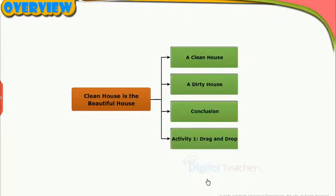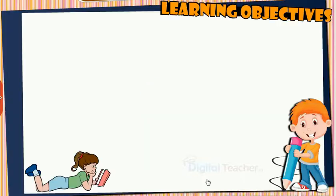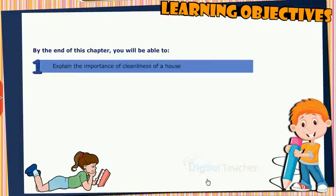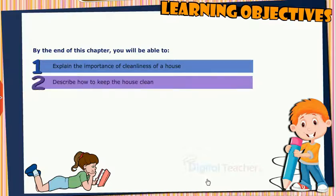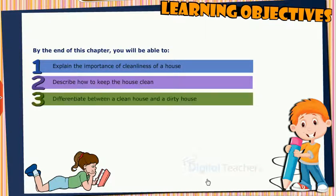This slide presents the overview of the chapter. Learning Objectives: By the end of this chapter, you will be able to explain the importance of cleanliness of a house, describe how to keep the house clean, and differentiate between a clean house and a dirty house.